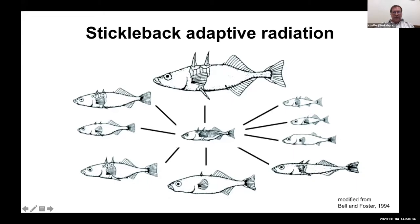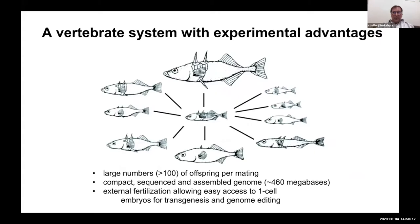In those new freshwater environments, the fish adapt to new ecological pressures, including a shift in diet. The ancestral oceanic fish filter-feed on small plankton, while freshwater fish are known to hunt and crush larger items. Fish are great model organisms because they have large numbers of offspring per mating — over 100 offspring per clutch. This species has a very small genome, an eighth the size of the human genome, and embryos are fertilized externally, allowing easy access to one-cell embryos for transgenesis and genome editing.